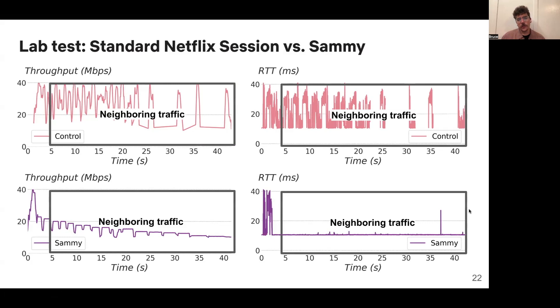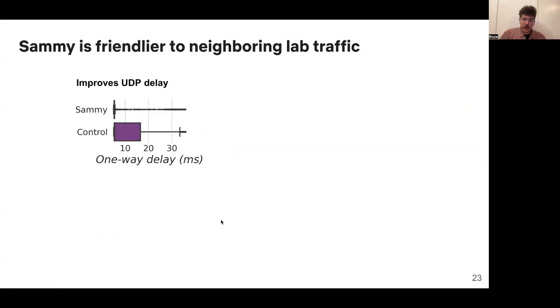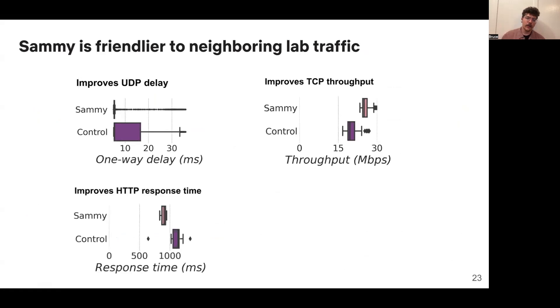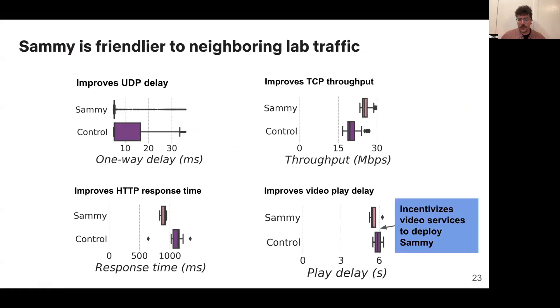Now let's look at how this impacts neighboring traffic. We'd expect two things here. One is we'd expect a lower queuing delay, because there's no queuing delay with SAMI. And we'd also expect higher throughput, because here the TCP fair share is 20 megabits per second, and SAMI is sending slower. So this is basically what we see. We see improvements in UDP queuing delay, we see improvements in TCP throughput, and we also see higher level application improvements, like lower HTTP response times, and faster times to start playing videos. This last one is particularly exciting because it means that video services are incentivized to deploy SAMI when they share networks with themselves.